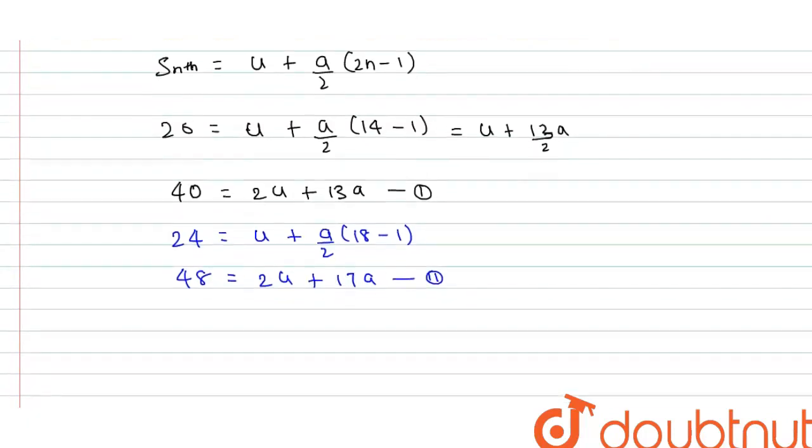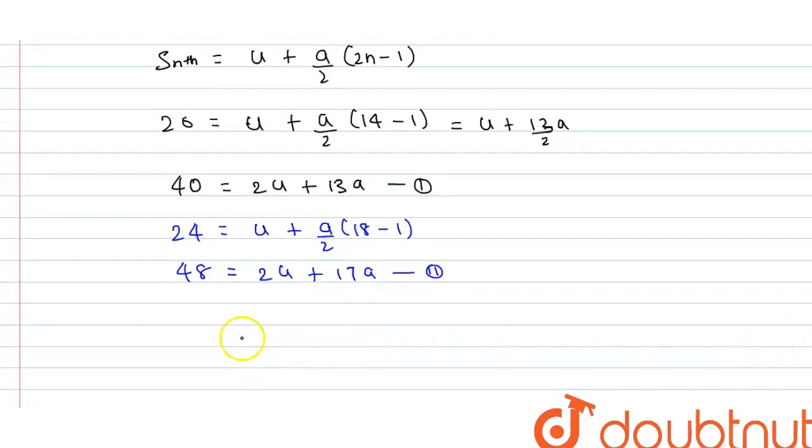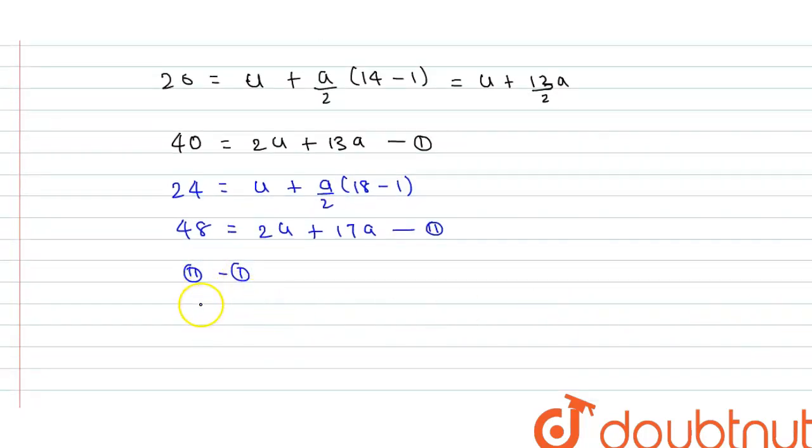Now subtract equation 2 from equation 1. 2 minus 1. We will get 48 minus 40 is equals to 8. 2u, 2u cancel, 17 minus 13, 4a. Therefore, acceleration of particle is 2 meter per second square.